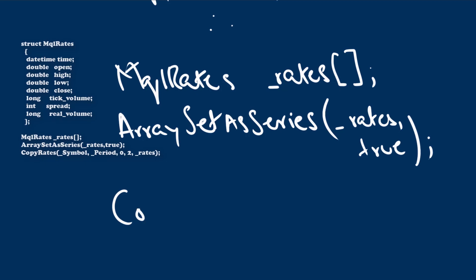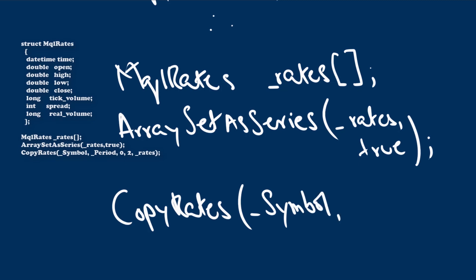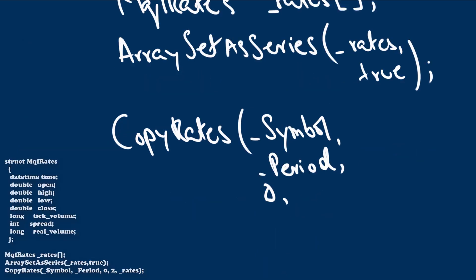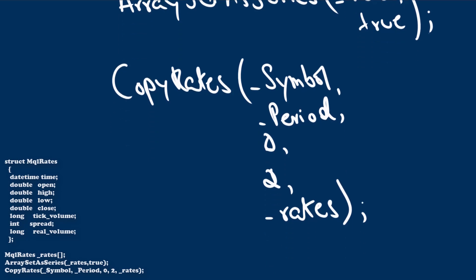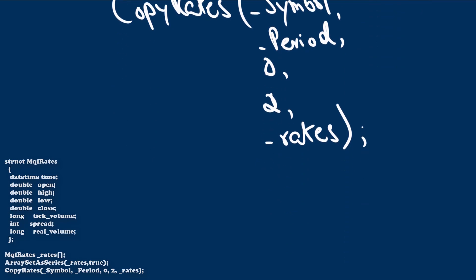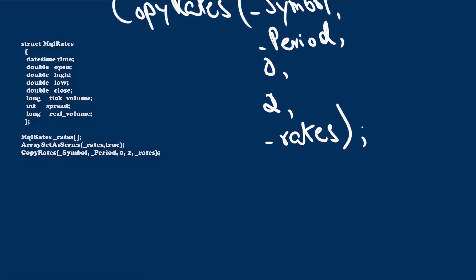Invoke CopyRates, telling it to get the information for this symbol at this period, starting at index zero — the current bar — for the number of items you want, such as two for the current and previous bar. That information is then stored in the _rates array. Rates will now contain time, OHLCV, spread, and real volume if it exists for the symbol.